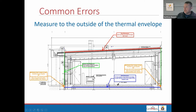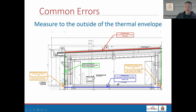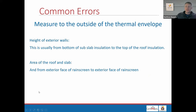Another common error is measuring to the outside of the thermal envelope. The height of your walls runs from the bottom of sub-slab insulation to the top of roof or attic insulation. So wall height actually includes the slab edge and the depth of roof insulation. Your slab dimensions go to the outside of the thermal envelope for your walls. Make sure you're measuring to the outside dimensions of the thermal envelope — then you can account for what's happening in those corners using thermal bridge calculations.